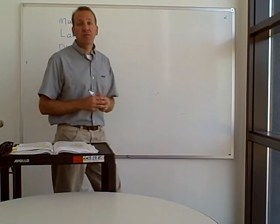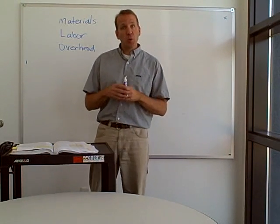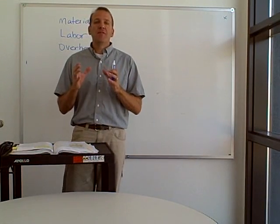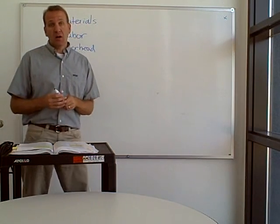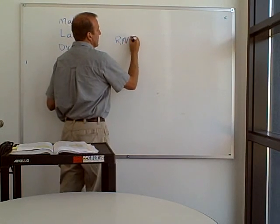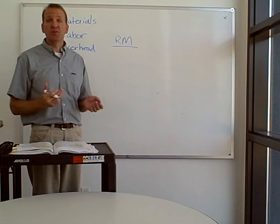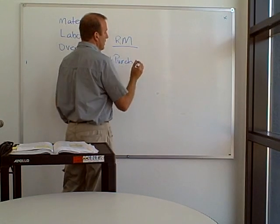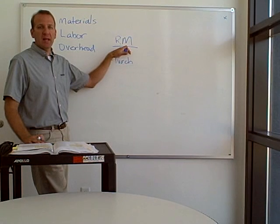Now let's look at how these costs flow through our inventory system. Inventory is a product that we're going to sell. For a manufacturer, the materials we purchase are called raw materials. So we have our raw materials — I'm going to abbreviate that RM, or sometimes DM because raw materials are direct materials. We purchase raw materials and they go into a raw materials inventory account.